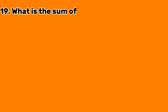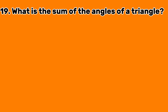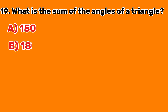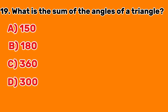Question 19: What is the sum of the angles of a triangle? A. 150. B. 180. C. 360. D. 300. Answer C: 360.